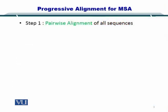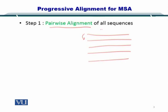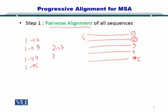As a first step in progressive alignment for MSA, you perform pairwise alignments on all sequences. You take these sequences and align sequence 1 with all other sequences — aligning 1 with 2, 1 with 3, 1 with 4, and 1 with 5. In this way, sequence 2 will also be aligned with all other sequences, and this process continues until all sequence alignment combinations are created.